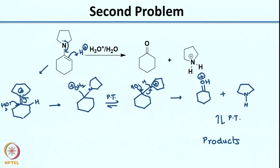Once I have this species, I can do a proton transfer to give the product. If you write the reaction mechanism very systematically, there is very little chance of falling into any trap or making any mistake. As you see in this case, I have maintained the medium as acidic and the net charge has been balanced.